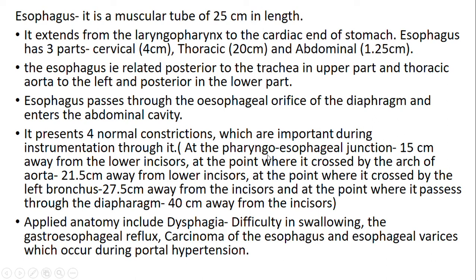The pharyngeal constriction is 15 cm away from the lower incisors. At the point where it is crossed by the arch of aorta, that is 25.5 cm away from the lower incisors. At the point where it is crossed by the left bronchus, that is 27.5 cm away from the incisors. And at the point where it passes through the diaphragm, that is 40 cm away from the incisors. Applied anatomy includes dysphagia, gastroesophageal reflux, carcinoma of the esophagus, and esophageal varices which occur during portal hypertension.